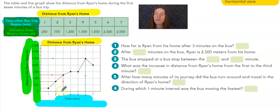The first question asks us, how far is Ryan from his home after three minutes on the bus? Here's one minute, two minutes, three minutes. And then I go up here to find how far away he is. They've added these nice little red lines for us. If I trace this across, I see him at a halfway point between 1,000 and 1,500. So that would be 1,250 is how many meters away from his home he is at the third minute. I'm going to put the M right there to let you know that we're counting meters.